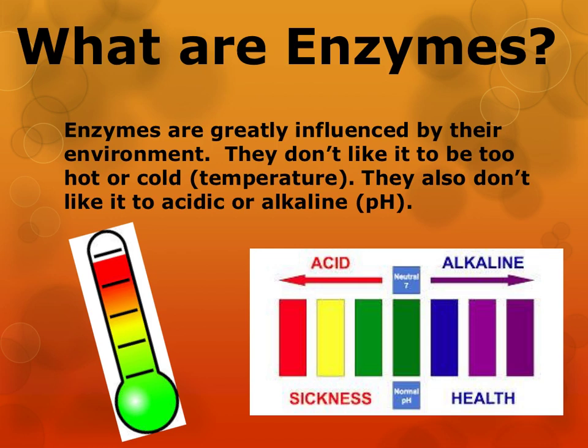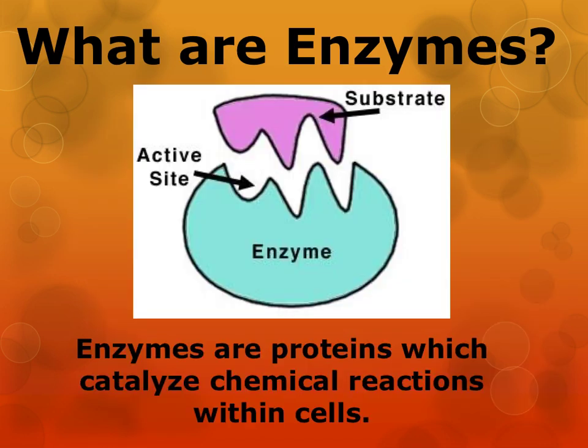Remember, enzymes are kind of fussy. They're greatly influenced by their environment. They don't like it to be too hot nor too cold. They also don't like it to be acidic or too alkaline. Thus, temperature and pH would be two environmental factors which control how enzymes do their jobs. This picture shows how the substrate and the enzyme interact together — the substrate fits almost perfectly into the active site of the enzyme. Because it's not quite a perfect fit, the bonds of the substrate become weakened, allowing the enzyme to do its job.